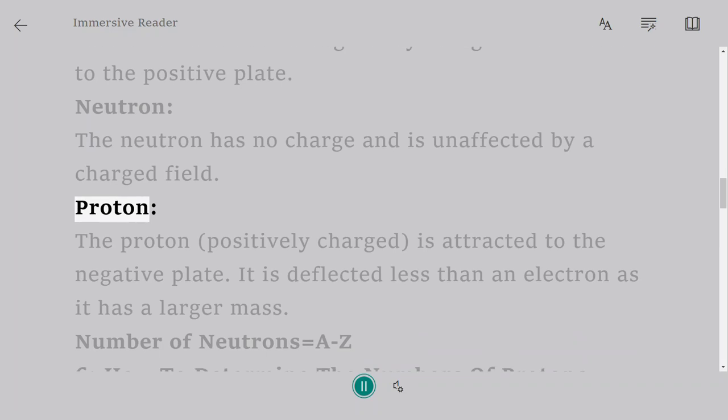Neutron: The neutron has no charge and is unaffected by a charged field. Proton: The proton, positively charged, is attracted to the negative plate. It is deflected less than an electron as it has a larger mass. Number of Neutrons equals A-Z.